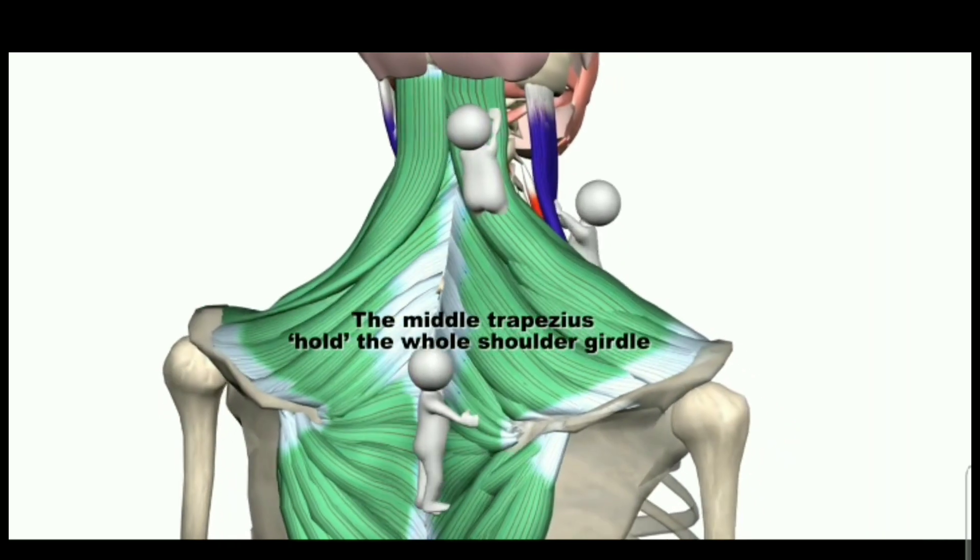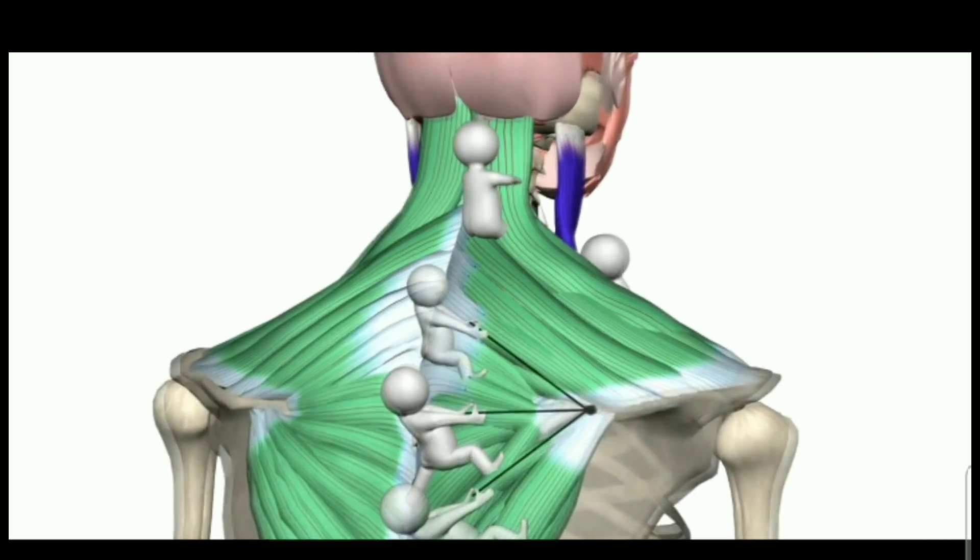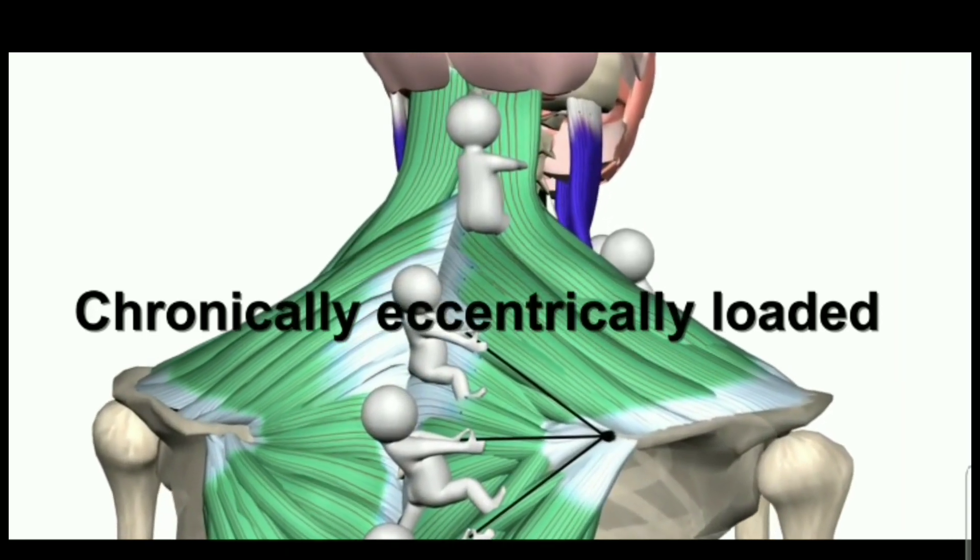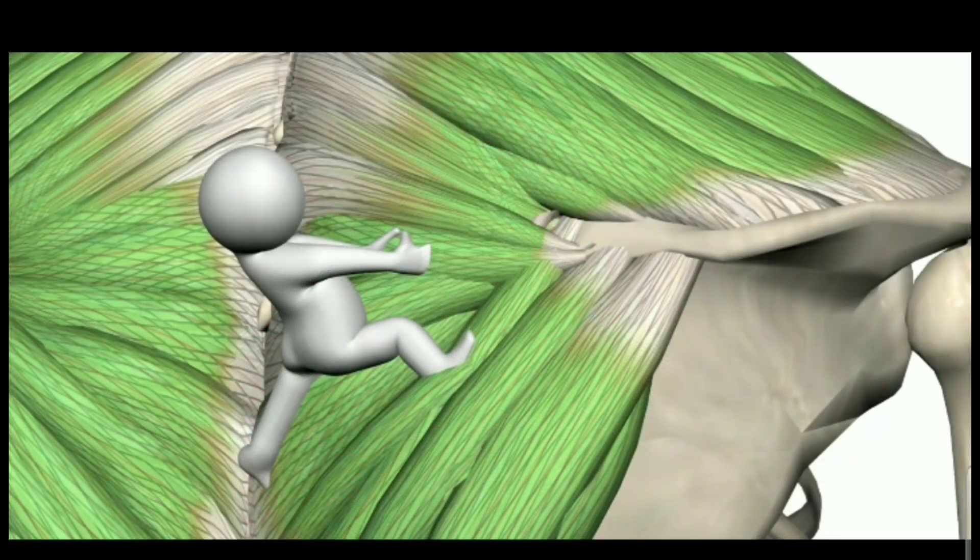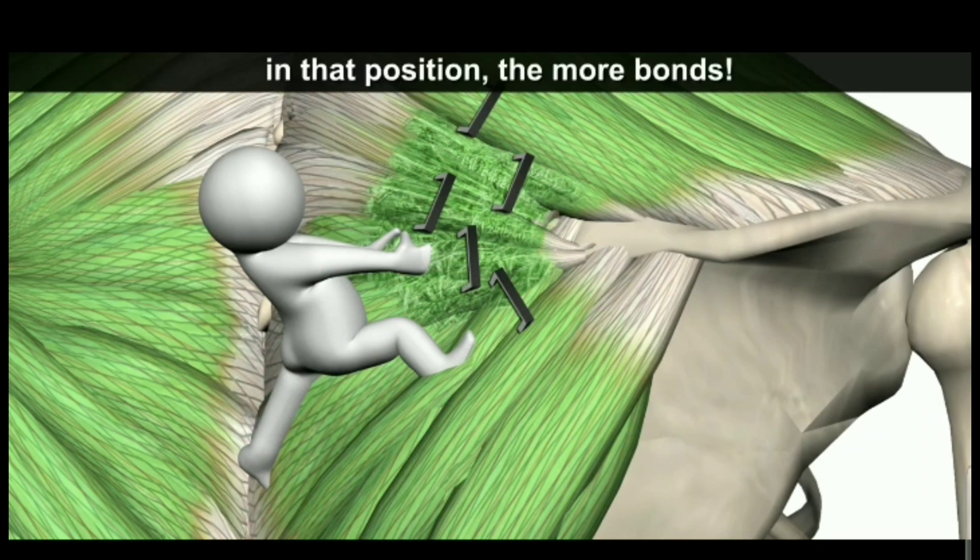The trapezius holds the whole shoulder girdle. It is always tense and at the same time under pressure with no relaxation. The more time the tissue is held in that position, the more bonds are formed.